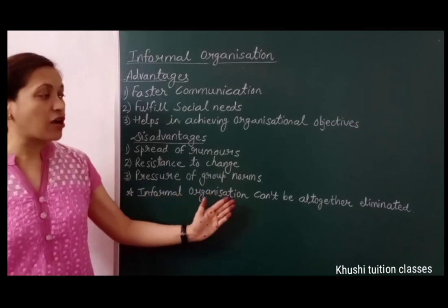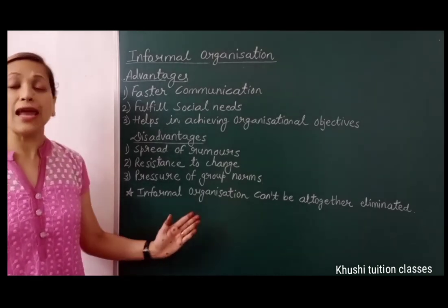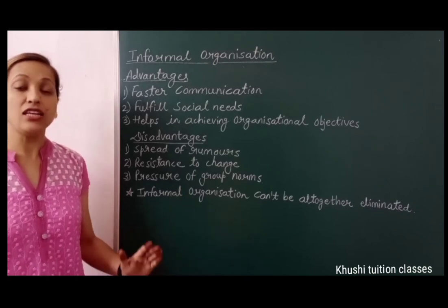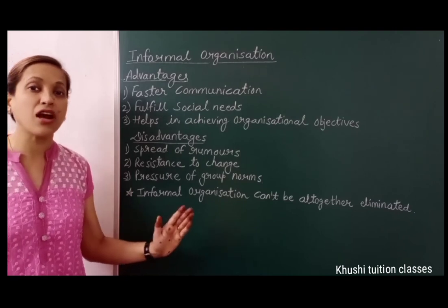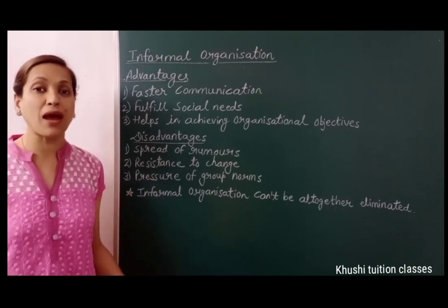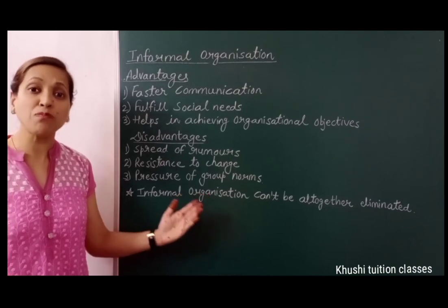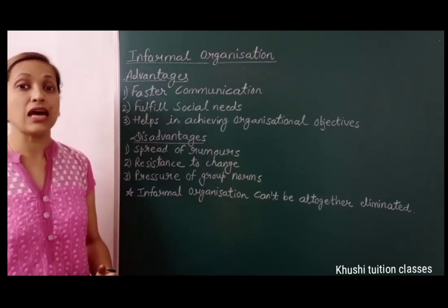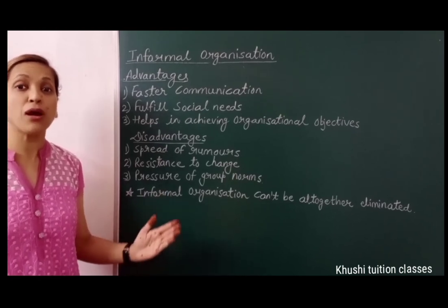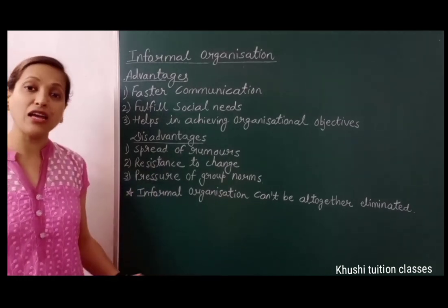Now, informal organization cannot be altogether eliminated. No management can eliminate informal groups from their formal organization. Therefore, management should find out these informal organizations and identify their group leaders — CCTV cameras can be used for this. If management wants to adopt any plan and policy, they should first convince the group leaders, and the informal group will automatically be convinced. Management can also take support of these informal groups for organizational interest and for fast communication. In this way, management should take support of informal groups in formal organization for their own benefit.